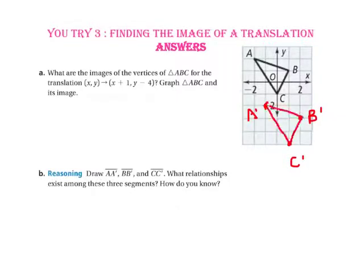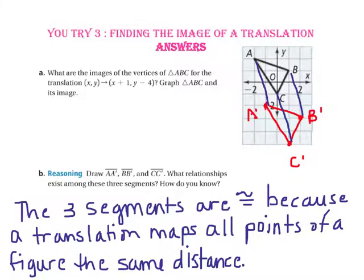Part B asks us to draw segment AA', segment BB', and segment CC'. What relationships exist among these three segments? How do you know? The three segments are congruent because a translation maps all points of a figure the same distance in the same direction.